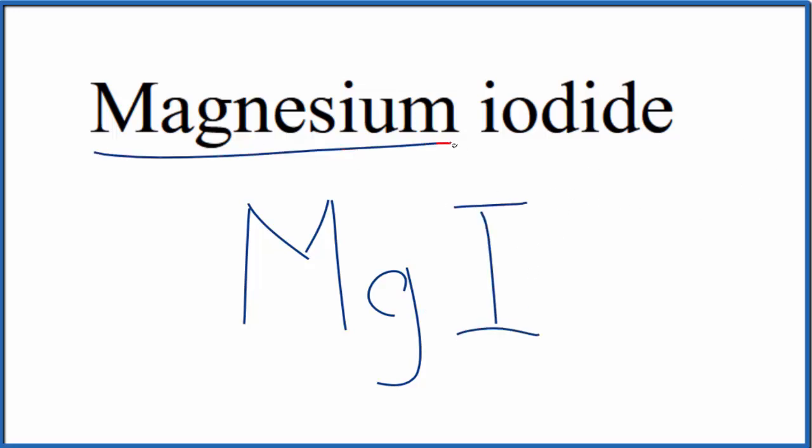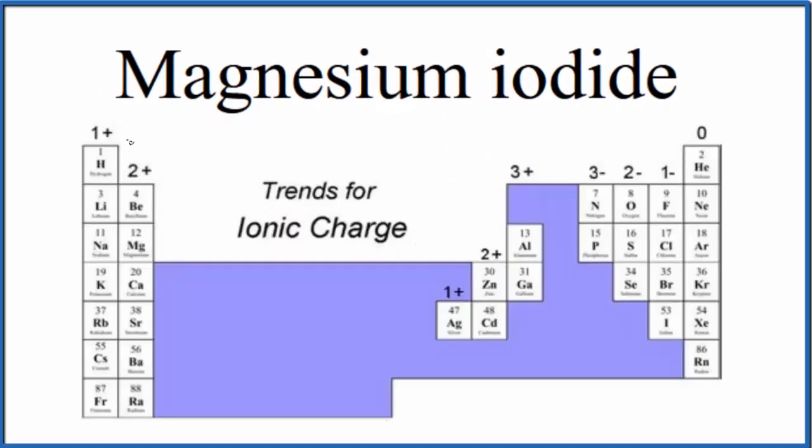But because magnesium is a metal and iodine is a non-metal, we have an ionic compound here. We need to take charge into account. So let's look at the periodic table organized by ionic charge. So magnesium right here, that's in group 2. All the elements here in group 2 will have a 2 plus ionic charge.